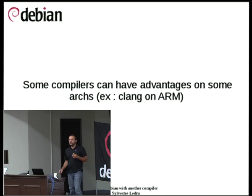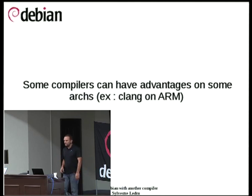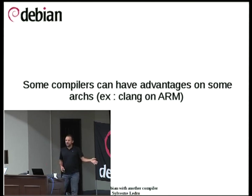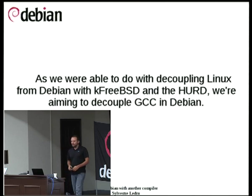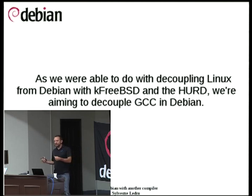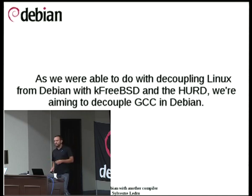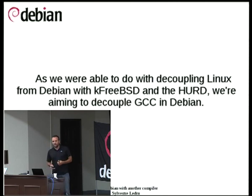Another advantage of this compiler is that there is a lot of investment in it by various actors in the embedded field. The latest benchmarks show that Clang on ARM is getting closer or sometimes better than GCC. And one of the things I like is we have been able in Debian to decouple the Linux kernel and replace it with other kernels — the kFreeBSD kernel and Hurd. So what I like to do is also replace GCC with another compiler. I'm not talking about removing GCC but providing an alternative.